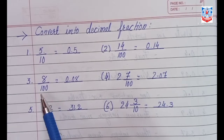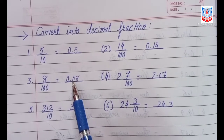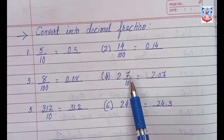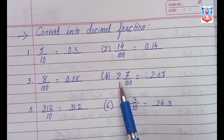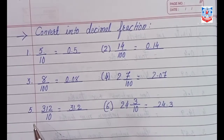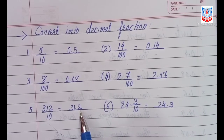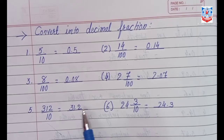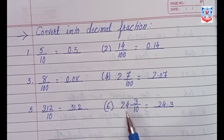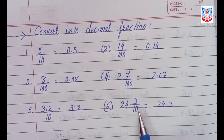For 8 by 100: again 100, two zeros, but we have only 1 digit — 8 — so we put a zero before 8, giving 0.08. For 2 integers and 7 by 100: 2 is the whole number, and 7 by 100 gives 2.07. For 312 by 10: divide by 10 means one zero, so we place the decimal point before the last digit — giving 31.2. For 243 by 10: 24 is the integer and 3 is the decimal part, so the answer is 24.3.